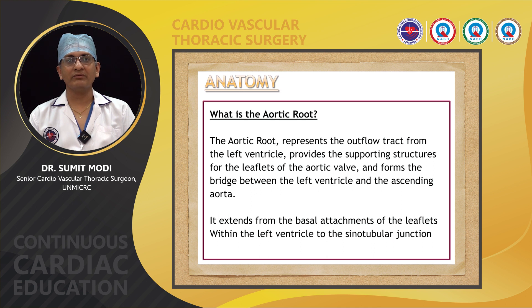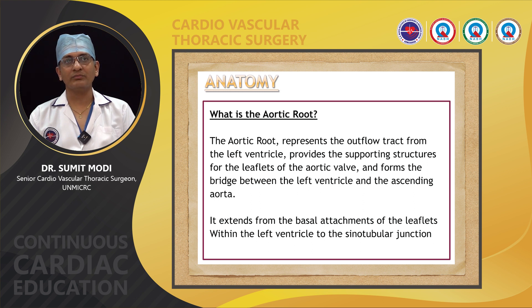Let's first begin with the anatomy of the aortic root. What is the aortic root? The aortic root represents the outflow tract from the left ventricle and it provides a supporting structure for the leaflets of the aortic wall and forms a bridge between the left ventricle and ascending aorta. It extends from the basal attachment of the leaflet within the left ventricle to the sinotubular junction.